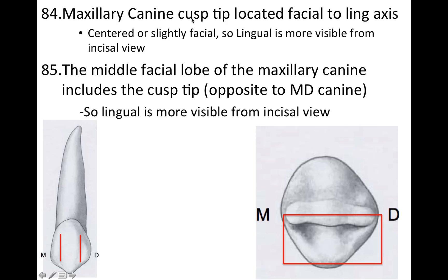The maxillary canine cusp tip is located facial to the lingual axis — another way of saying it is centered or slightly facial. Here's the cusp tip, and because it's located a little more toward the facial, the lingual is going to be more visible from the incisal view. The middle facial lobe of the maxillary canine includes the cusp tip, which is why the lingual is more visible from the incisal view.